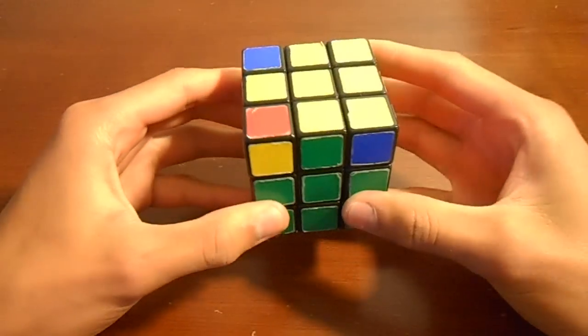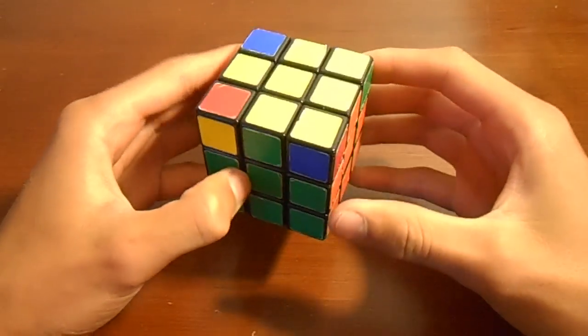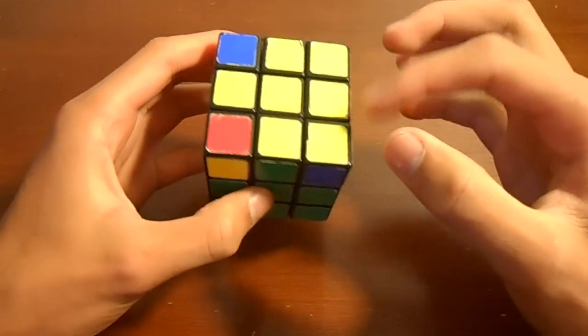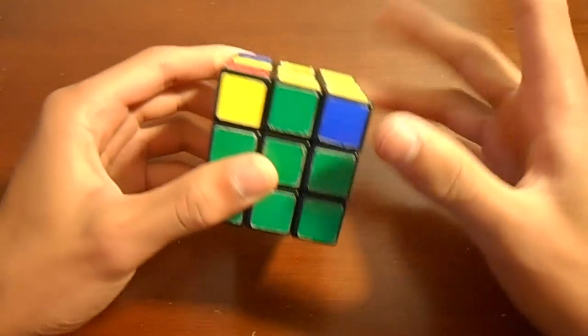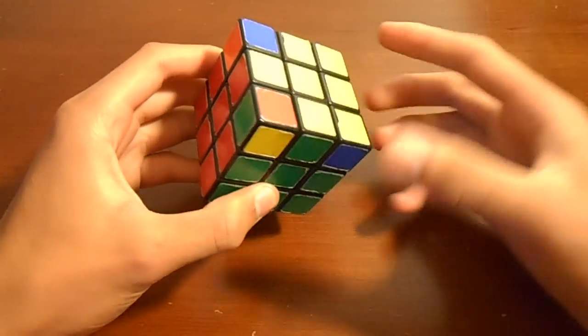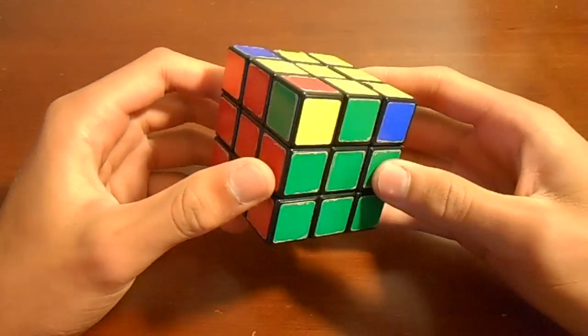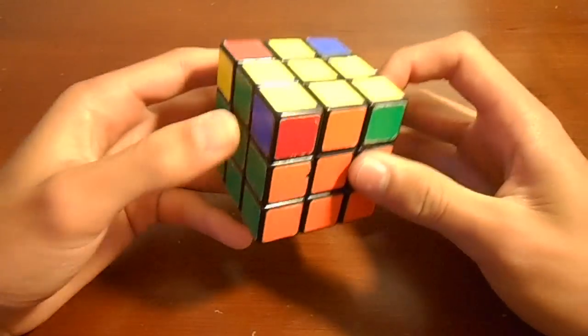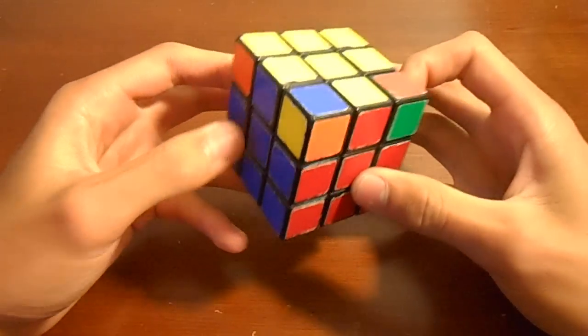So this is a two-step process. The first thing that we're going to do is we're going to put the corners in their proper positions, and then we're going to rotate them so that they're solved, and therefore the whole cube will be solved.